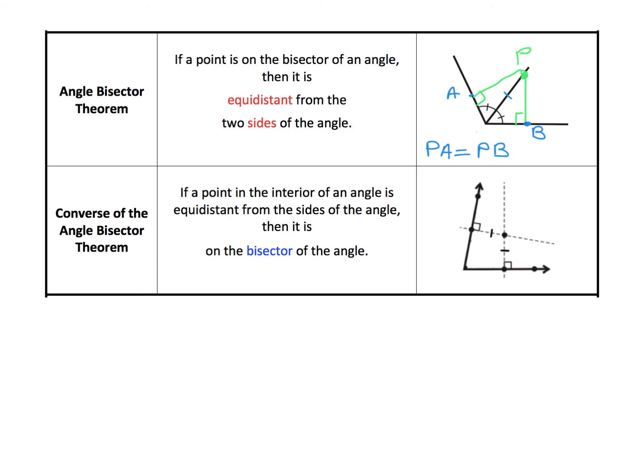The converse says: if a point in the interior of an angle is equidistant from the two sides, then it must be on the bisector of the angle — meaning we can add a bisecting ray dividing the angle into two equal halves. To summarize: the angle bisector theorem says if a point is on the bisector, it's equidistant from the sides; the converse says if a point is equidistant from the sides, it's on the bisector.